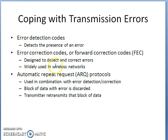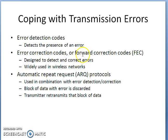To cope with transmission errors, which arise because of noise, there are two types of codes. The first is error detection code and the second is error correction code, also called forward error correction codes. Error detection codes can detect the presence of an error in the message, while error correction codes can both detect and correct errors. These forward correction codes are widely used in wireless networks.